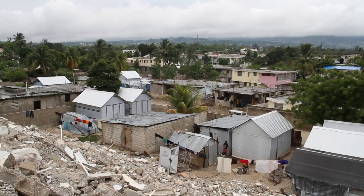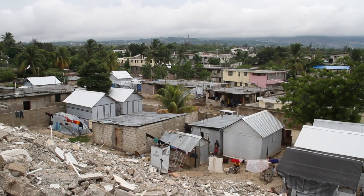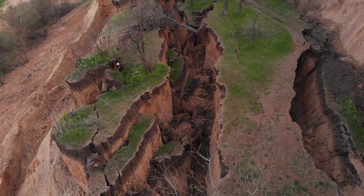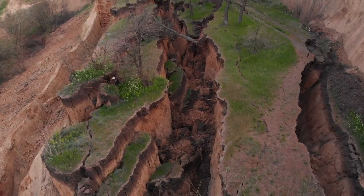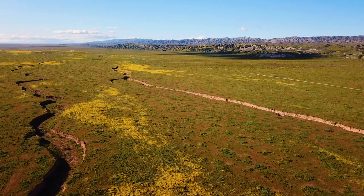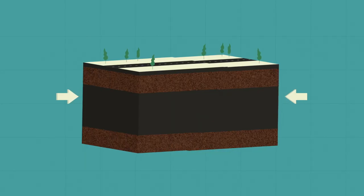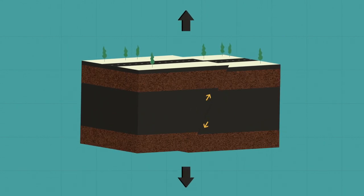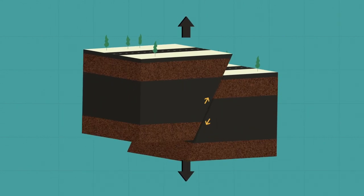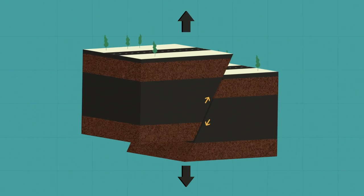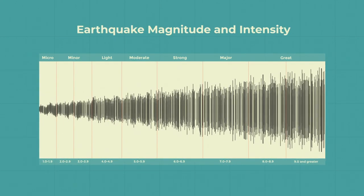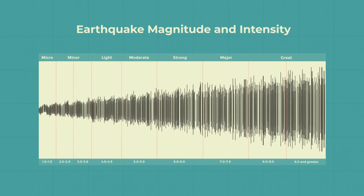Earthquakes are vibrations caused by rock breaking under stress. The rock breaks and moves along an underground surface called a fault plane. This movement is usually very sudden and releases a lot of energy, which is transmitted through the rocks as seismic waves. This event is measured on the moment magnitude scale.